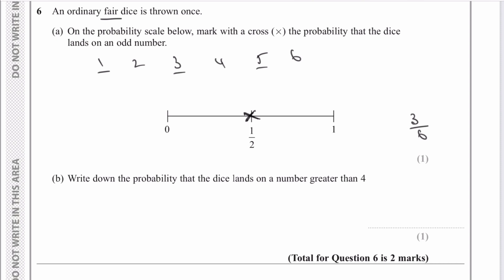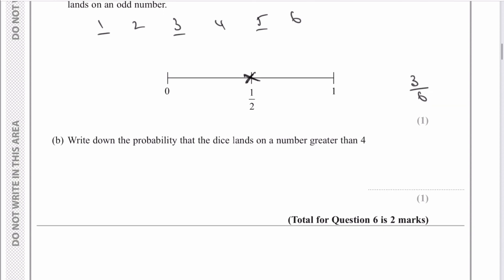Write down the probability that the dice lands on a number greater than four. The important thing is it's greater than four — not four and more than four, just greater than four. So it's going to be number five or number six, which gives a probability of two out of six. If you want to, you could reduce that to one out of three, but it didn't ask me to do that so I'm just going to leave it as it is.